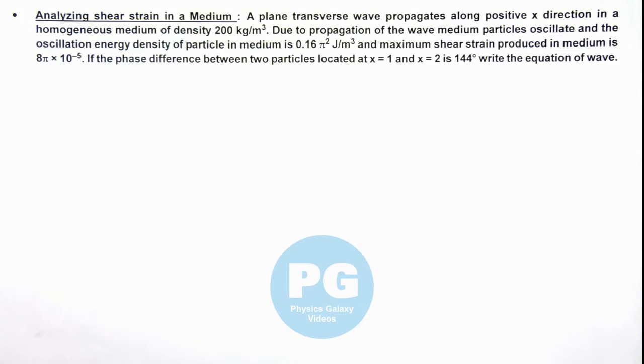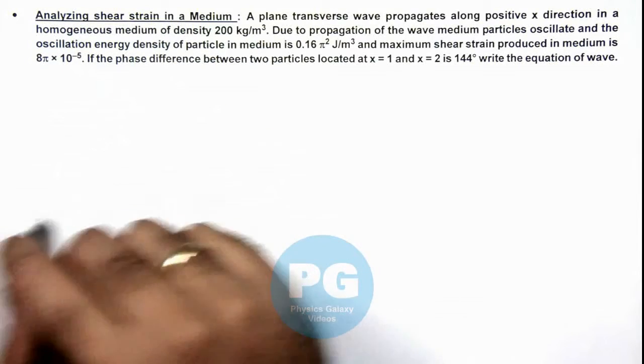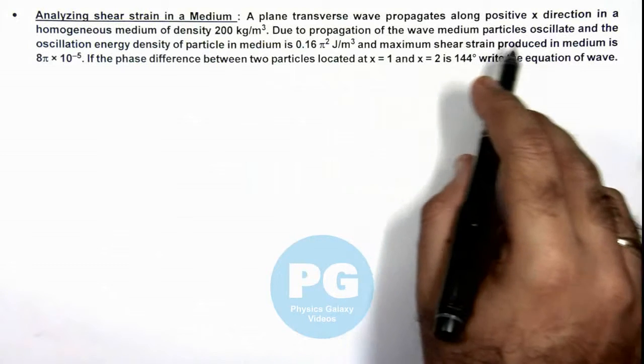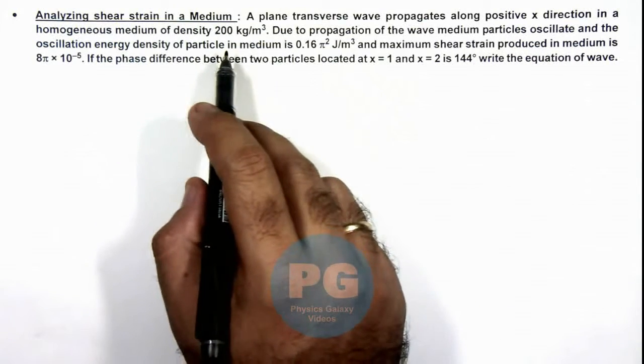In this illustration, we'll be analyzing the shear strain in a medium. We are given that a plane transverse wave propagates along positive x direction in a homogeneous medium of density 200 kilogram per meter cube.